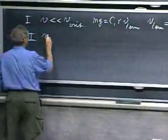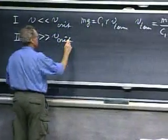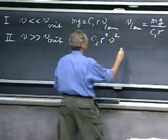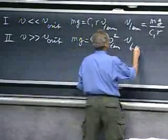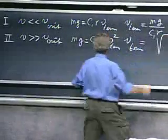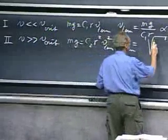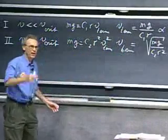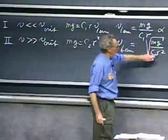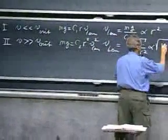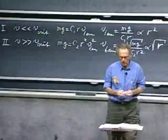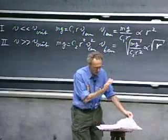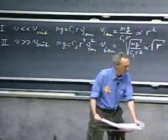Regime two is when v is much larger than v_critical. Then mg equals c2·r²·v², so the terminal velocity is the square root of mg divided by c2·r². If you take objects with the same density, m is proportional to r³, so this is proportional to the square root of r. We will see examples where you work exclusively in one regime or the other.